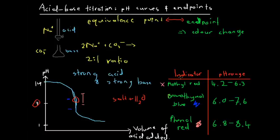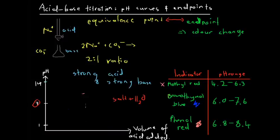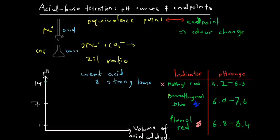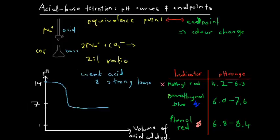That was the pH curve for a strong acid and a strong base. However, if we have a weak acid and a strong base, things look a bit different. Starting close to 14, as we add acid it drops quickly at first, but then plateaus at a higher pH than before. Because we only have a weak acid, when the solution is ultimately quite acidic from excess acid, the pH is closer to 6 rather than 2 or 3. The equivalence point is in this higher region.